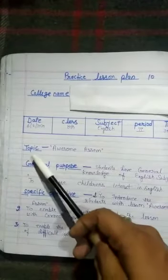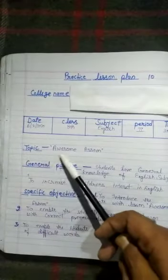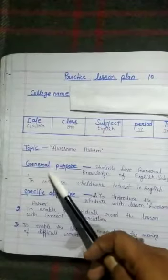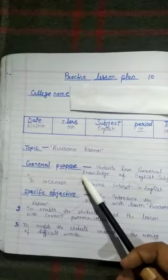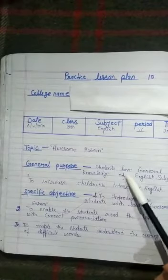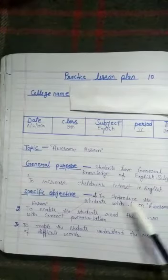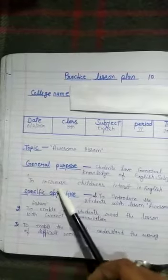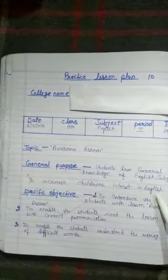Next headline, topic. Our topic is Awesome Assam. Next headline, general purpose. There are two points written here. First point, students have general knowledge of English subject. And second point, to increase children's interest in English.